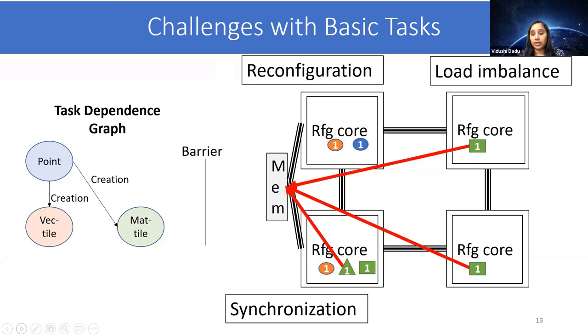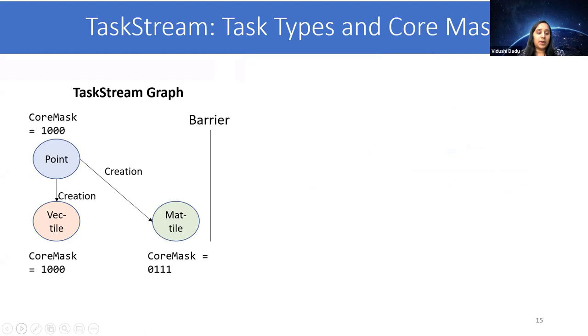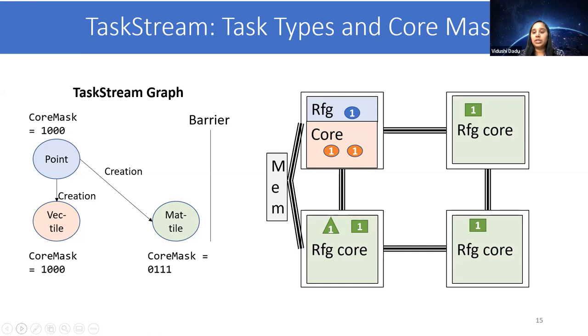In order to deal with these challenges, we propose a novel TaskStream execution model that encompasses all the necessary information for efficient execution of task parallelism on reconfigurable hardware. One such feature is core mask. Each of the task types can be annotated with a core mask, where the set bit represents which core its instances can be scheduled to. For example, the instances of point and vector can be scheduled to only core 0, while for matrix, they can be scheduled to cores 1, 2, and 3. Therefore, there would be no need for reconfiguration.